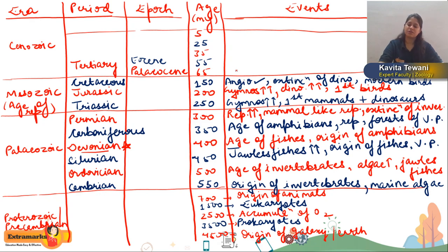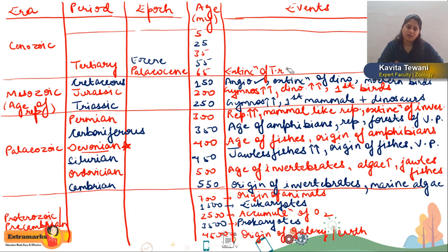In the Paleocene epoch: all dinosaurs got extinct except T-Rex (Tyrannosaurus Rex), which got extinct 65 million years ago. Mammals, pollinating insects, and birds — their numbers were all increasing in this era. In the Eocene epoch: angiosperms dominated and their number was more.